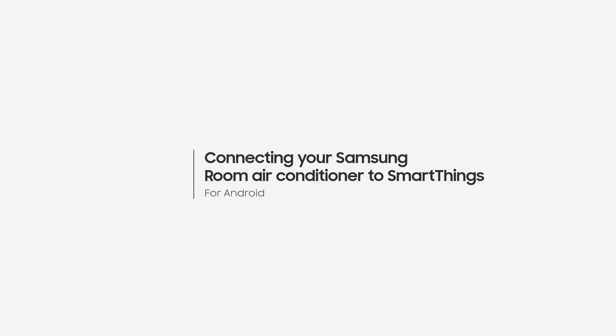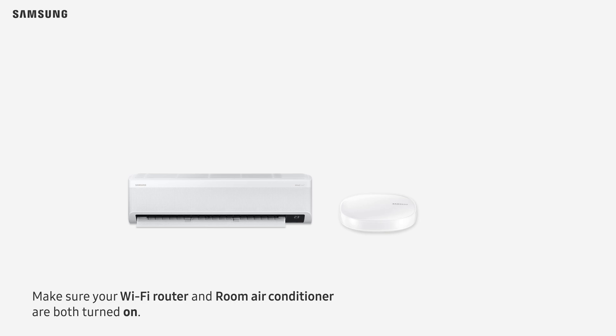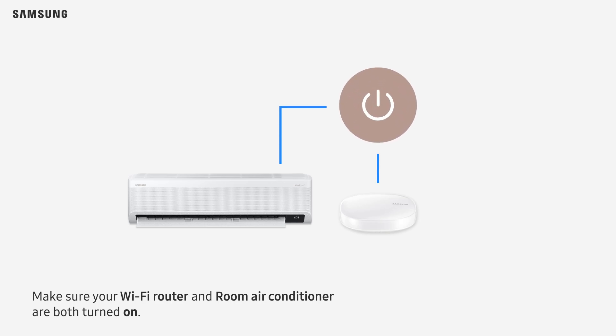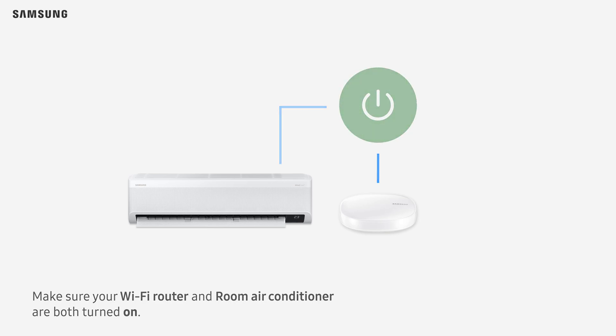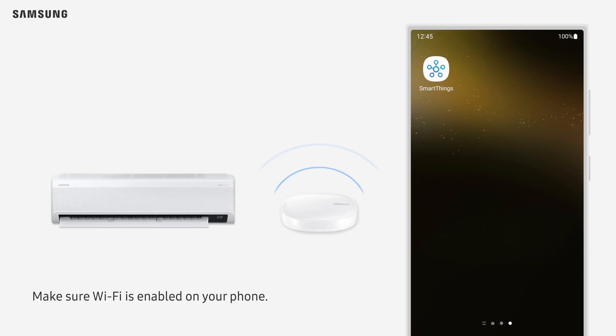Connecting your Samsung Room Air Conditioner to SmartThings for Android users. Make sure your Wi-Fi router and room air conditioner are both turned on. Make sure Wi-Fi is enabled on your phone.